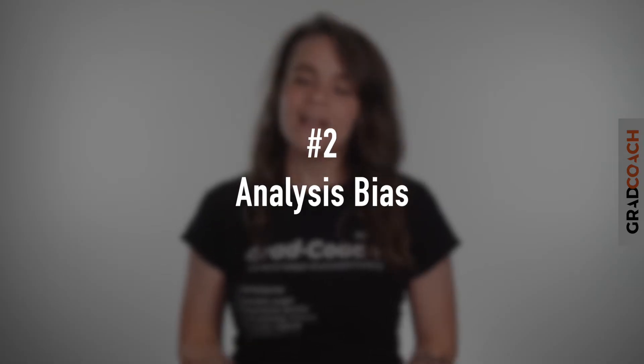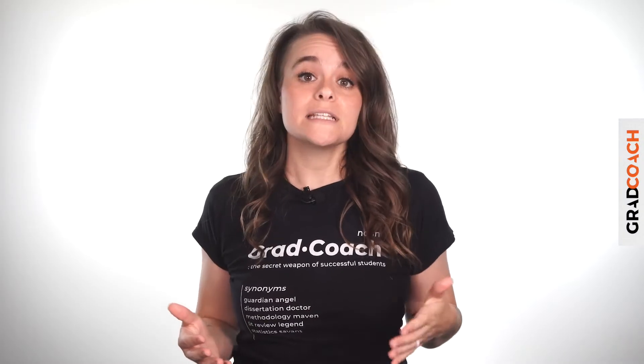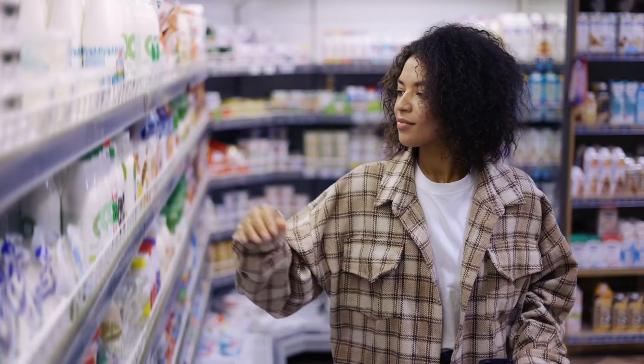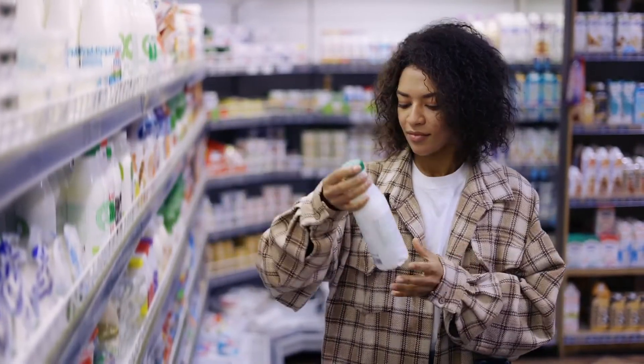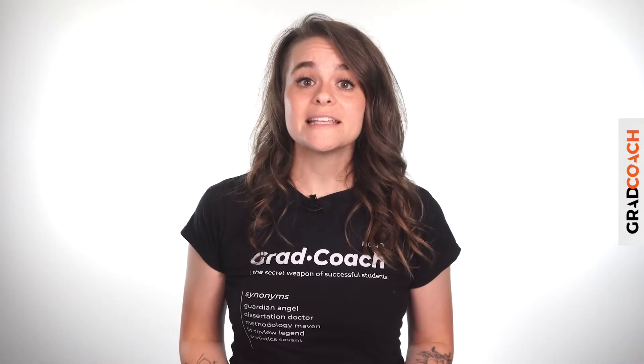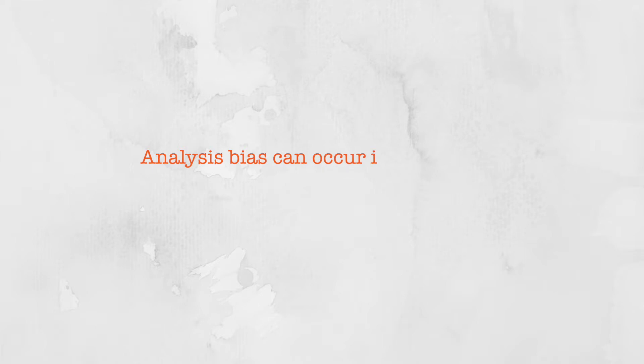Next up, we have analysis bias. Analysis bias occurs when the analysis itself emphasizes or discounts certain data points so as to favor a particular result — often the researcher's own expected result or hypothesis. In other words, analysis bias happens when you prioritize data that supports a certain idea rather than presenting all the data indiscriminately. For example, if your study was looking into consumer perceptions of a specific product, you might present more analysis of data reflecting positive sentiment and give less attention to data reflecting negative sentiment — essentially cherry-picking data that suits your desired outcomes.